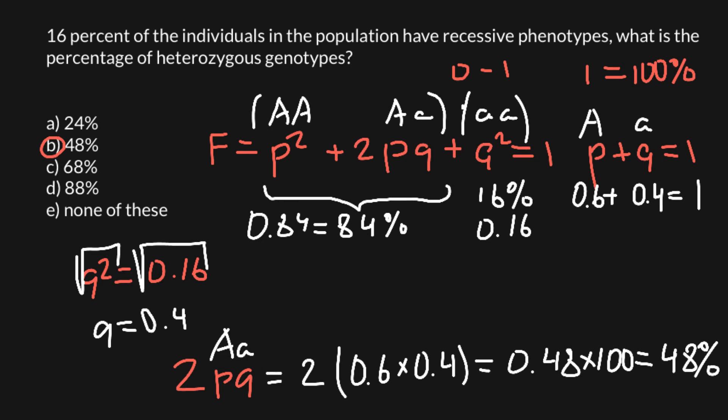Now it is very easy to find the frequency of the homozygous dominant genotype. Since we know the homozygous recessive is 16% and the heterozygous is 48%, we can subtract both from 100%. Alternatively, p squared equals 0.6 squared, which is 0.36, or 36%. So the three genotype frequencies are 36%, 48%, and 16%. That is all for today.